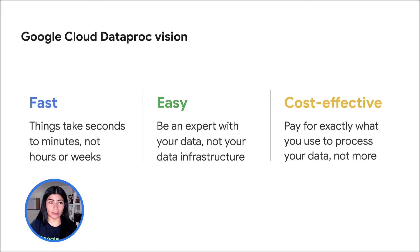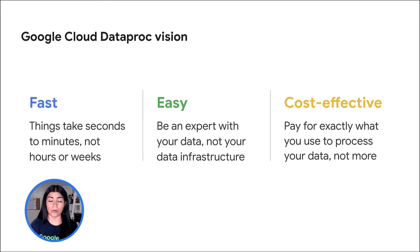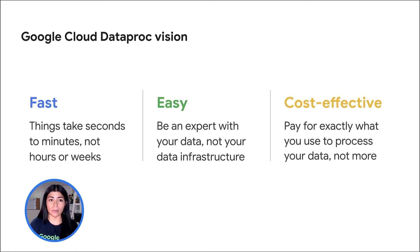Cloud Dataproc vision. Dataproc is fast. Without using Dataproc, it can take from 5 to 30 minutes to create Spark and Hadoop clusters on-premises or through infrastructure as a service providers. It is easy. You don't need an administrator or any special software to use Dataproc, because you can easily interact with clusters and Spark or Hadoop jobs through the Google Cloud Console, the Cloud SDK, or the Dataproc REST API. It is cost-effective. Dataproc charges you only for what you really use, with 2nd-by-second billing and a low 1-minute minimum billing period.